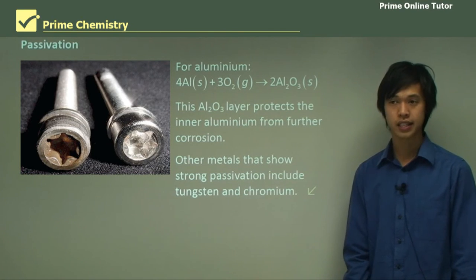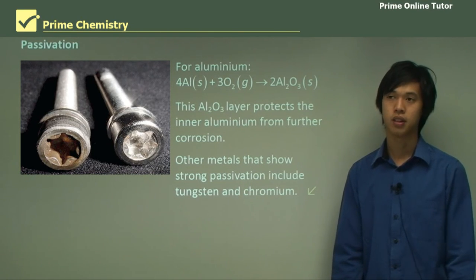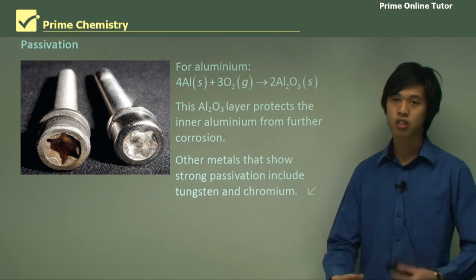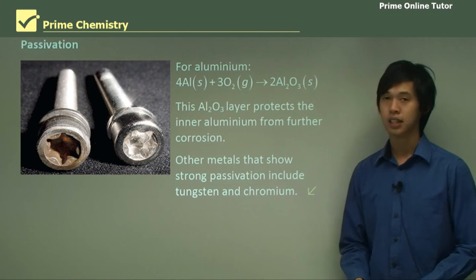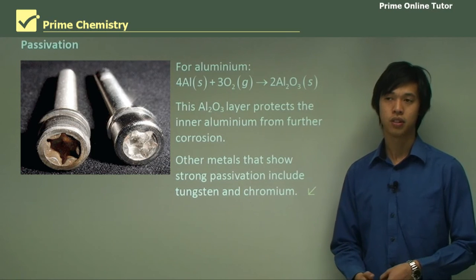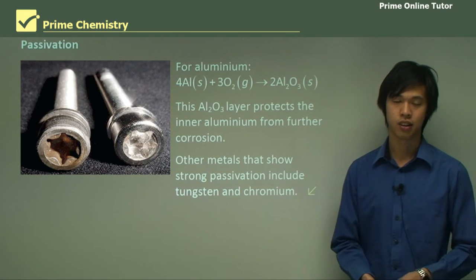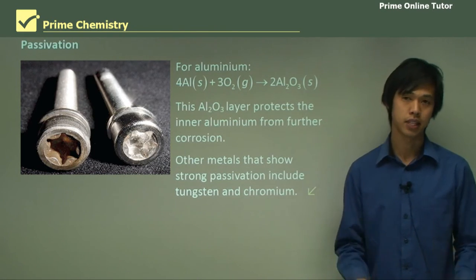That concludes today's lesson on alloys and ships. We've looked at what an alloy is and the usage of metals in ships. We've also looked at corrosion, passivation, and what they are, and how they affect our material choice.